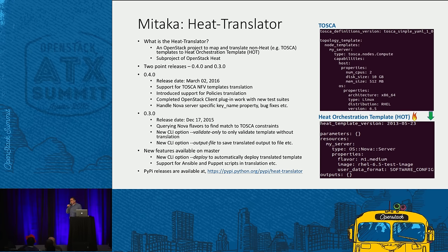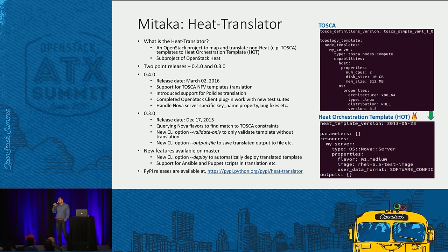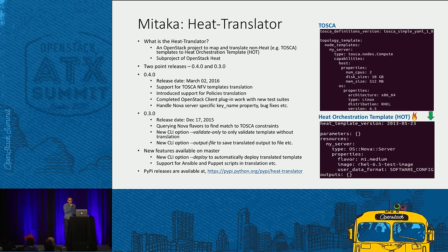During point three, we are now dynamically querying against Nova to get the flavor. We keep adding new command line options to make the translator more user-friendly. During the Mitaka cycle we added options like validating a template without translating it, and saving the translator output to a preferred location.